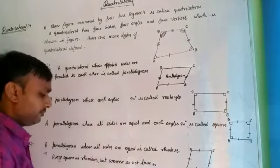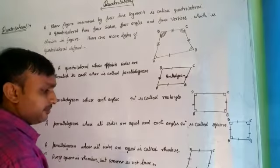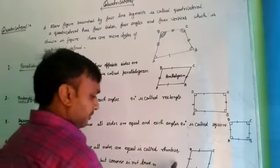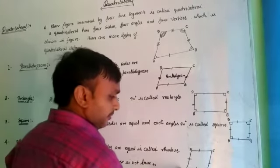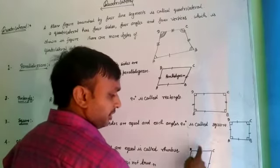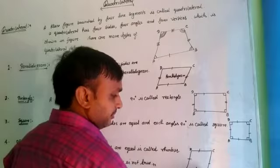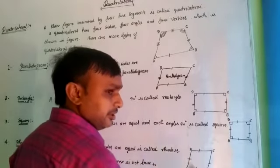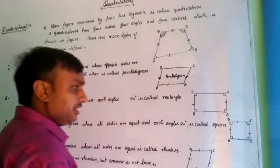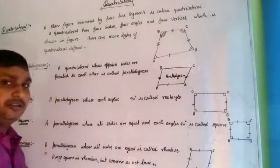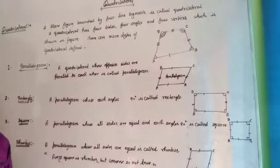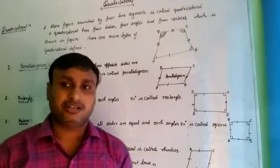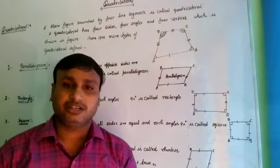Every square is a rhombus, but the converse is not true. A quadrilateral whose all sides are equal — that is A, B, C, D — is called a rhombus. Every square is a rhombus, but the converse is not true.